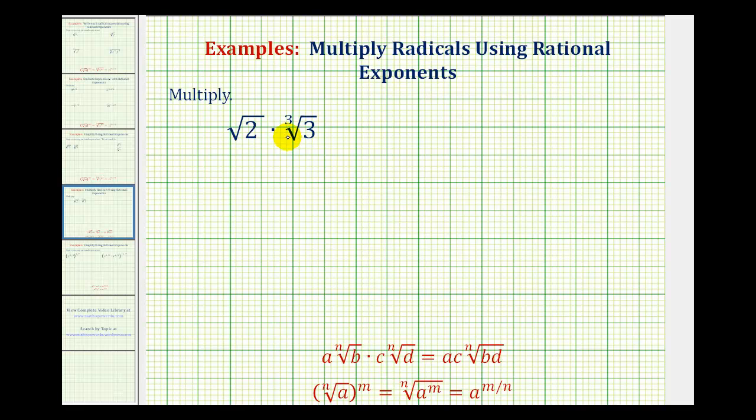Now we want to multiply two radicals that have different indexes. But we already know that in order to multiply two radicals, the index must be the same. And once we have the same index, we can multiply the coefficients and then multiply the radicands together.